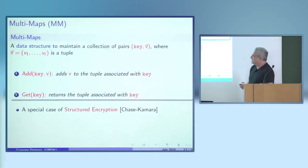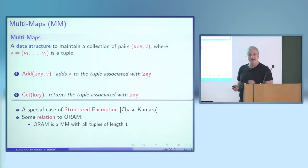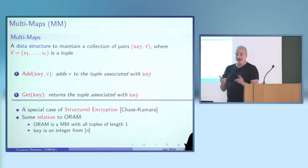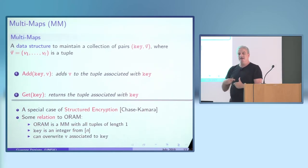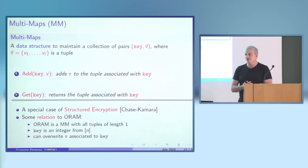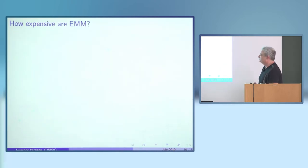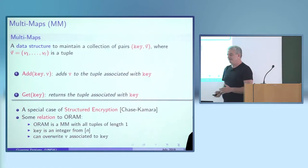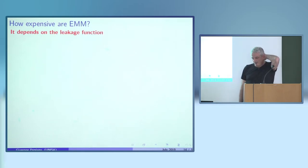This is a special case of structured encryption, a concept introduced by Chase and Kamara. It relates to ORAM: in ORAM, all tuples have length one — a single b-bit block — and keys are integers in 1 to n, whereas here keys come from a key universe. In ORAM you can overwrite the single value; here you can only append, starting from an empty tuple.